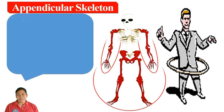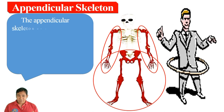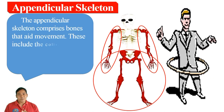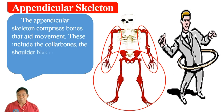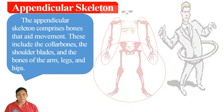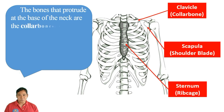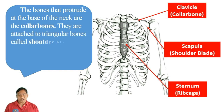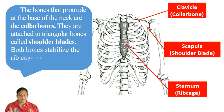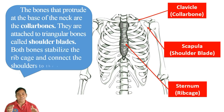The appendicular skeleton comprises bones that aid in movement. These include the collar bones, shoulder blades, and the bones of the arms, legs, and hips. The collar bones are the bones that protrude at the base of the neck. They are attached to the triangular bones called shoulder blades. Both bones stabilize the rib cage and connect the shoulders to the arms.